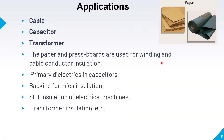Applications of paper: paper and pressboard are used as solid insulating materials. They are generally used in all electrical appliances. Basic applications are cable, capacitor, transformer, and rotating machine. Paper and pressboard are used for winding and cable conductor insulation. Paper serves as a primary dielectric in capacitors and can be used with mica backing insulation.